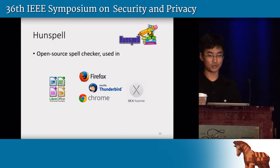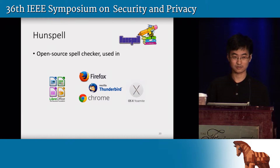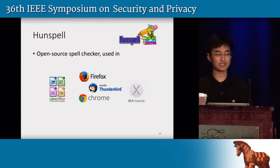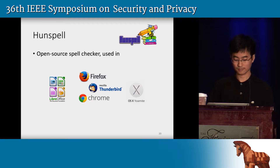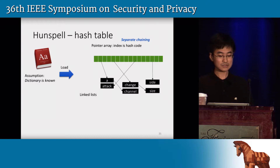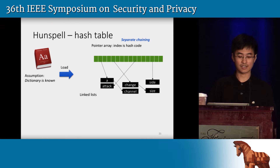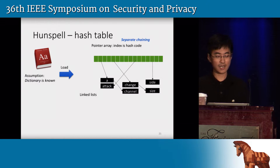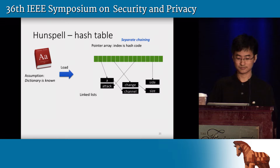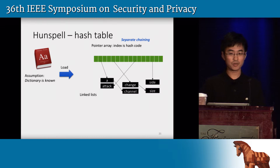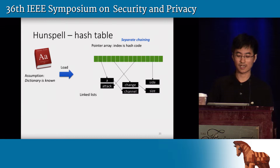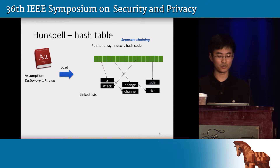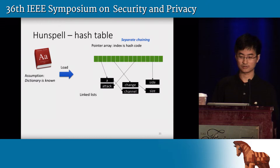I'll use Hunspell as an example to show how we can use this basic idea to extract application data. Hunspell is an open-source spell checker used in many popular applications like LibreOffice and Firefox. At initialization, it loads a dictionary file into a big hash table. The hash table is implemented using separate chaining. There are two parts: an array of pointers where the index corresponds to a unique hash code, and each element points to a linked list containing all words sharing the same hash code. This is a standard way to deal with hash collisions, so all applications using similar data structures will have the same type of vulnerability.